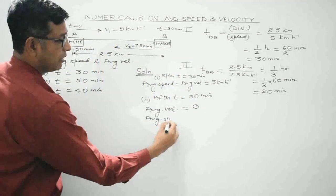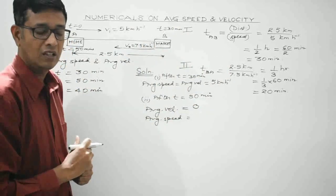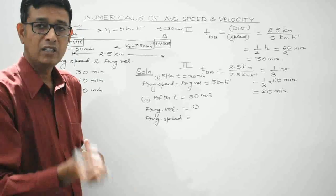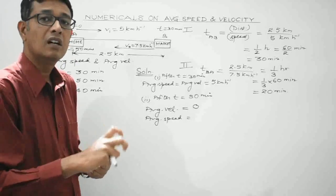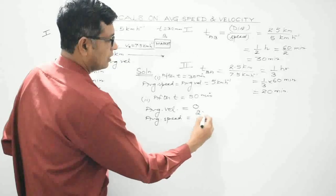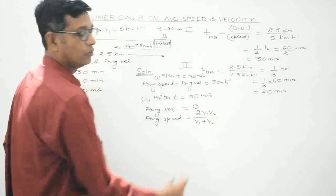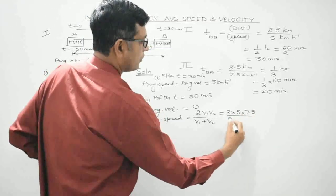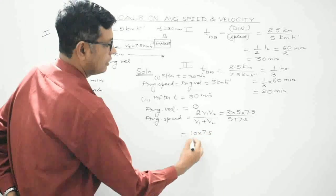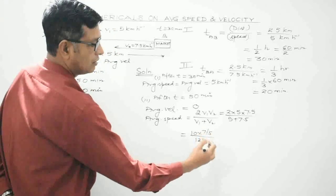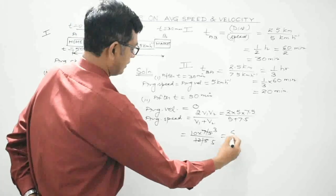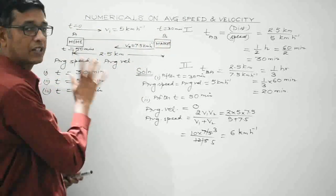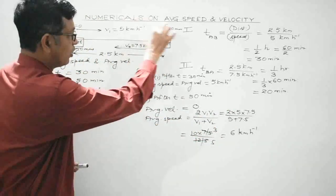For average speed at t = 50 minutes, we use the harmonic mean formula — applicable when a body covers equal displacements in unequal intervals of time: average speed = 2V₁V₂ / (V₁ + V₂). Substituting V₁ = 5 and V₂ = 7.5: (2 × 5 × 7.5) / (5 + 7.5) = 75 / 12.5 = 6 km per hour.